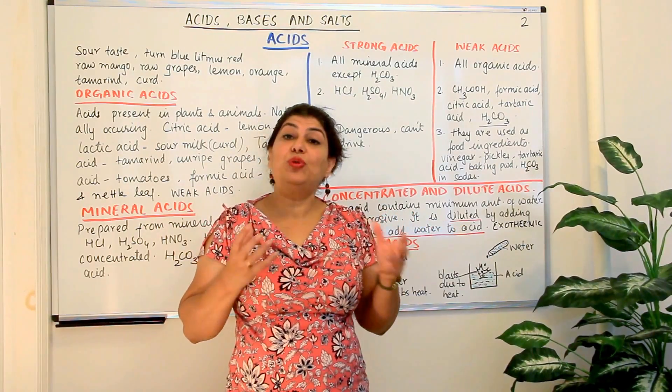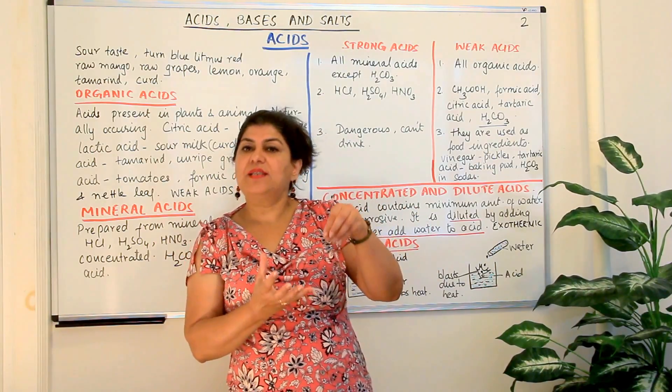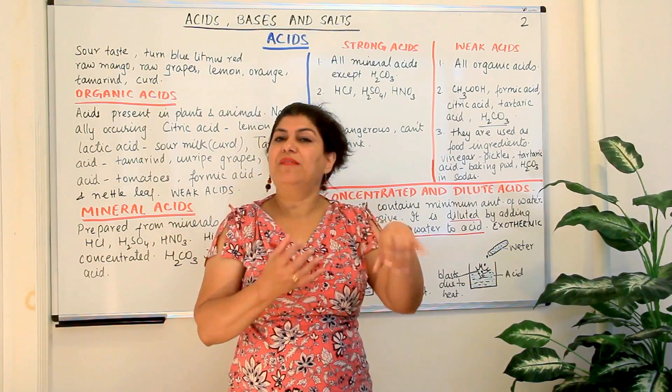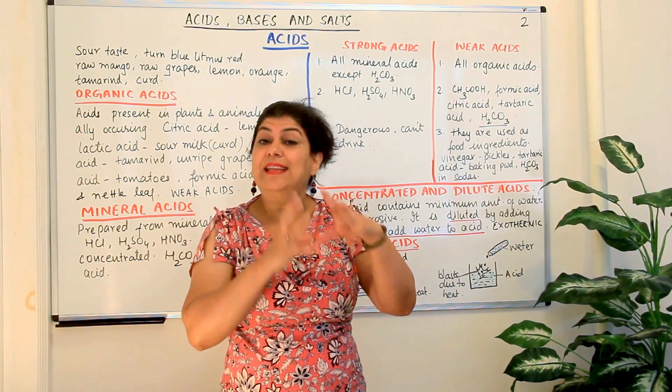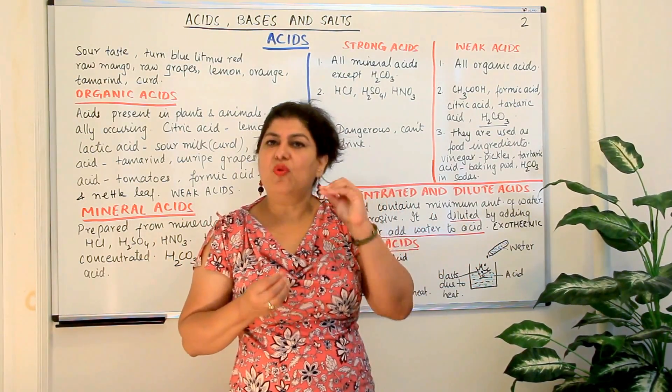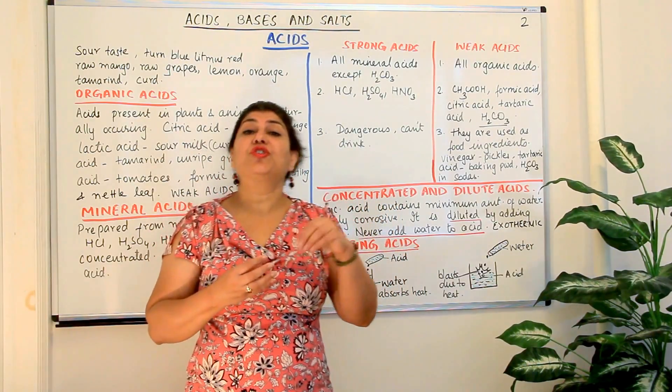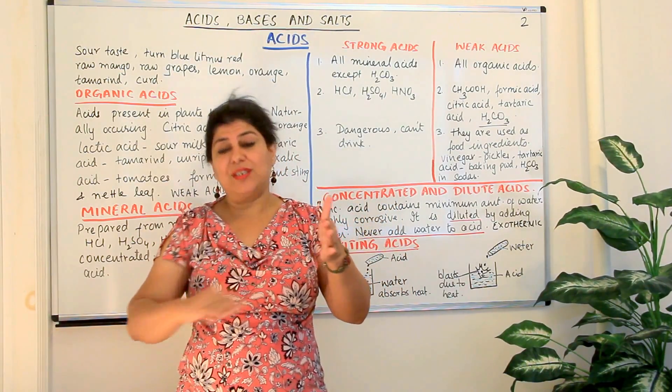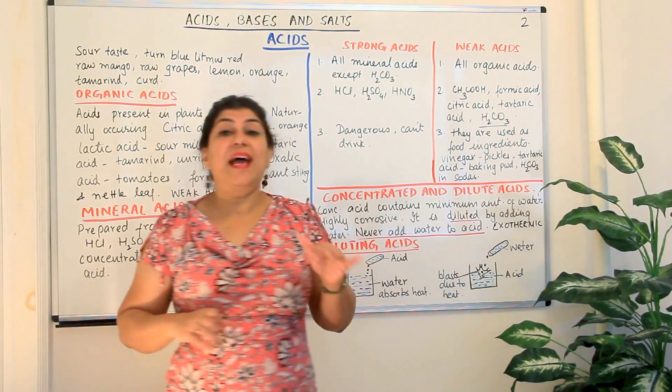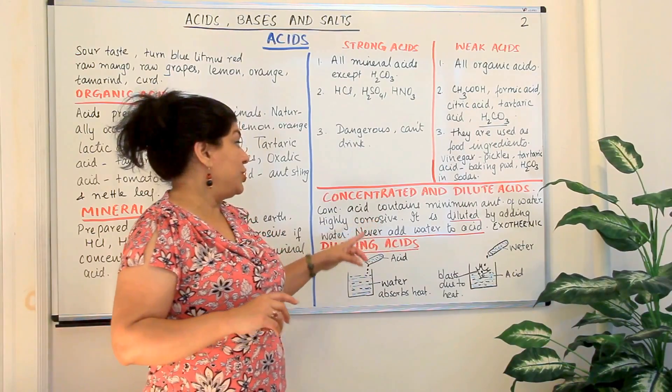So when you talk of acids, and I told you acids can only act as acids when they are dissolved in water. When we add minimum amount of water and we dissolve it to make an acid, that acid is known as a concentrated acid. If you add more of that substance to it, it will not dissolve in that water. It will just separate out. So a concentrated acid would be an acid which contains minimum amount of water.